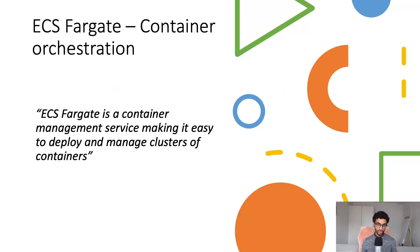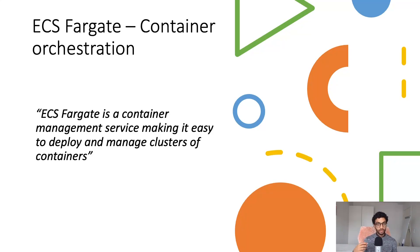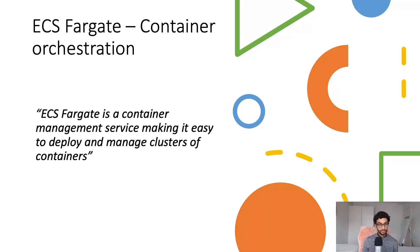ECS Fargate is a container orchestration or container management service that makes it easy to deploy and manage clusters of containers. ECS Fargate is based on serverless compute, which basically means that the server is abstracted away from you. So you don't need to worry about updates and patches and all the things we discussed in the previous section. There's also another version of ECS which uses EC2 instances as the compute, but we won't be going into that in this video.